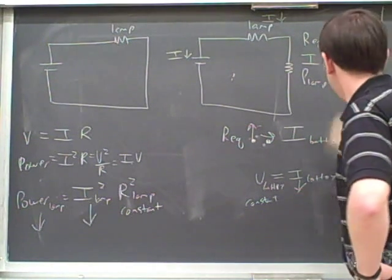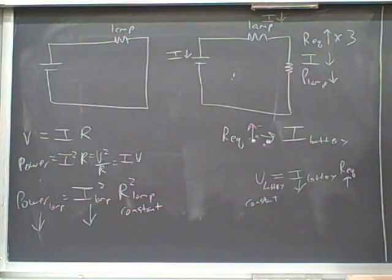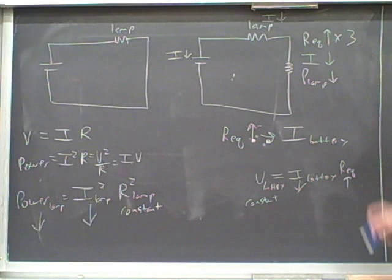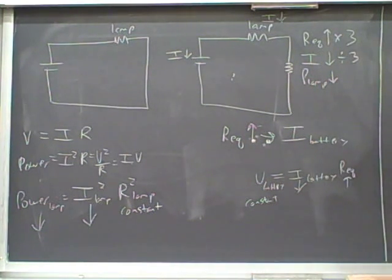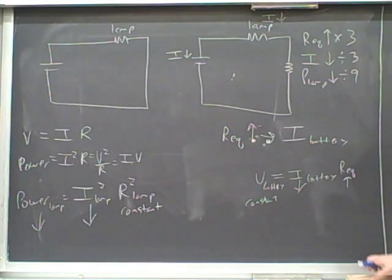Let's do another example. Let's say that the equivalent resistance was multiplied by three — increased by a factor of three. Then we know the current is going to decrease by a factor of three, so we divide the current by three. And then the power will be divided by a factor of nine. That's right.